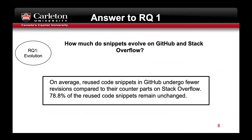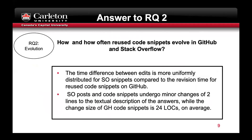Coming to the results. Our first RQ is how much do snippets evolve on GitHub and SO. We found that on average, reused code snippets in GitHub undergo fewer revisions compared to their counterparts on Stack Overflow. 78.8% of the GitHub snippets remained unchanged. We also found that the time difference between edits is more uniformly distributed for Stack Overflow snippets compared to the revision time for their reused snippets on GitHub. Stack Overflow snippets undergo minor changes of two lines to the textual description of the answers, while the change size to GitHub code snippets is 24 lines of code on average.